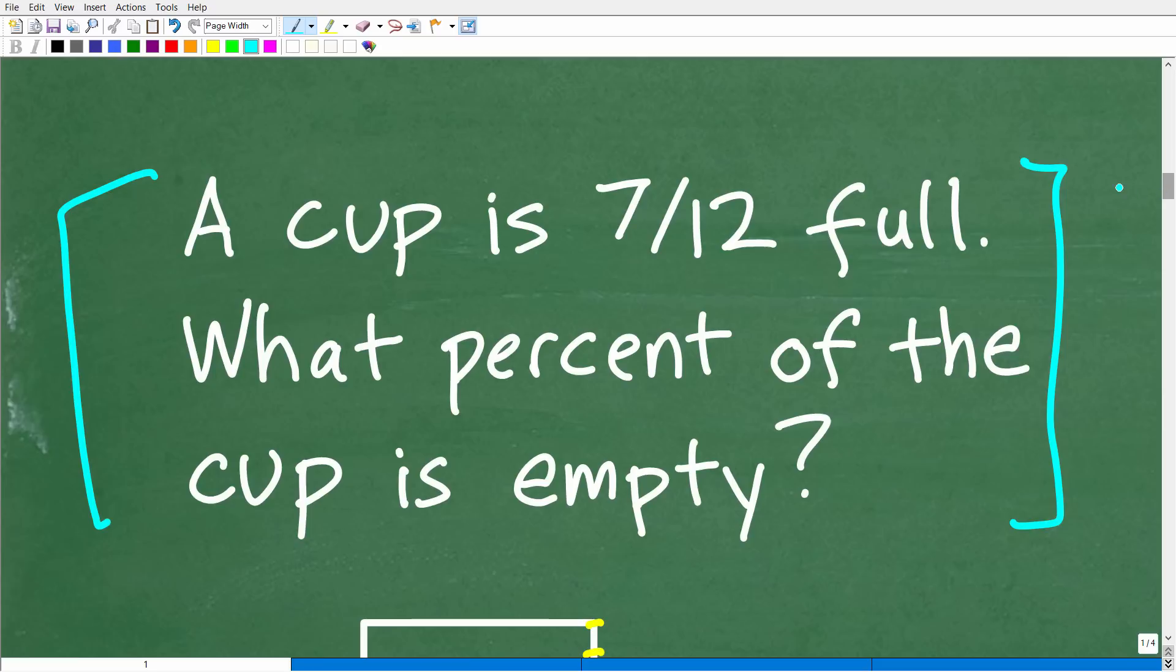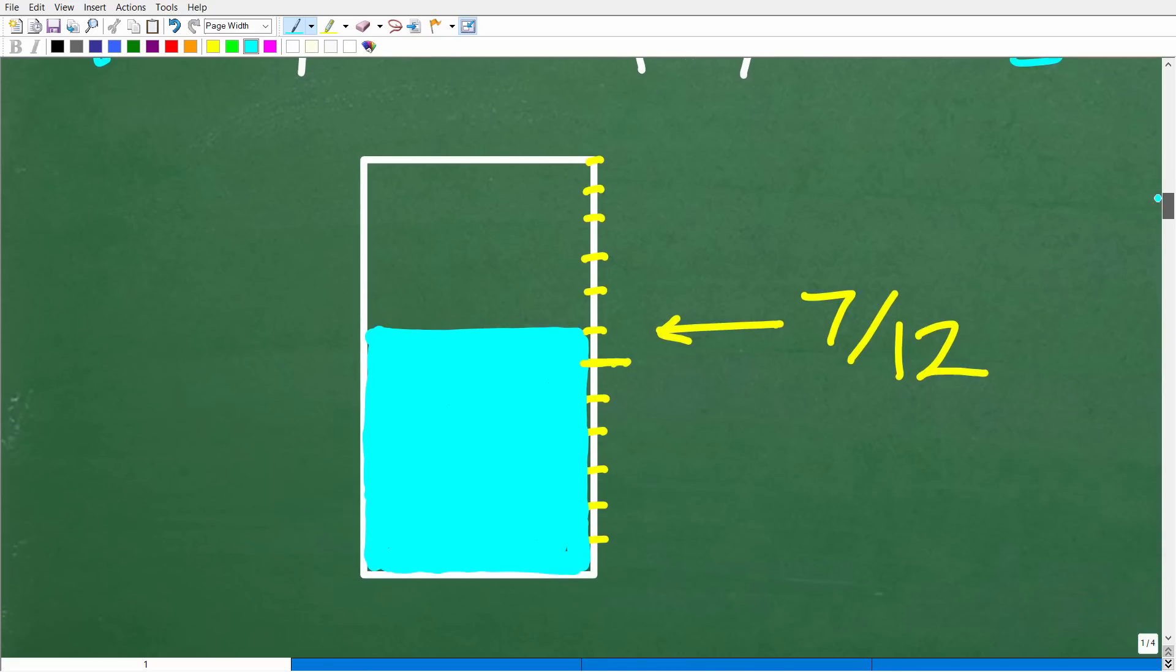So 7/12, again, when you are drawing a little sketch, you want to make it kind of reasonable. In other words, we know that 7/12 is more than one half, right? So you don't want to draw a cup and then maybe put your 7/12 like this, because that could confuse you. So try to make your sketches or your model of whatever a math problem that you're dealing with the representation of it as accurate as possible.